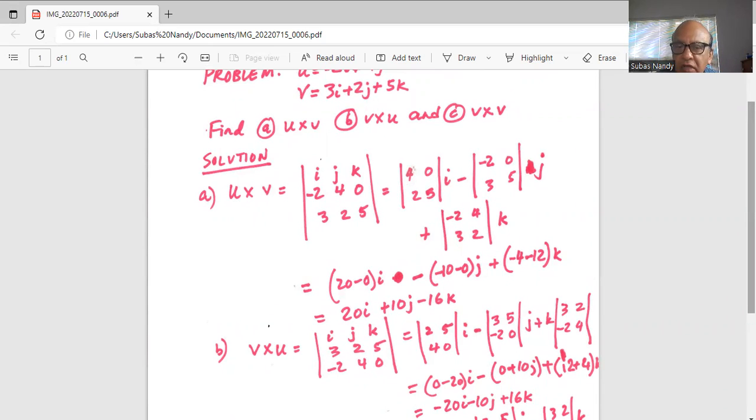Then, like before, we first eliminate the first row and first column, we are left with 2, 5, 4, 0, for i, and then negative, eliminate the first row and the second column, we are left with 3, -2, and 5, 0.